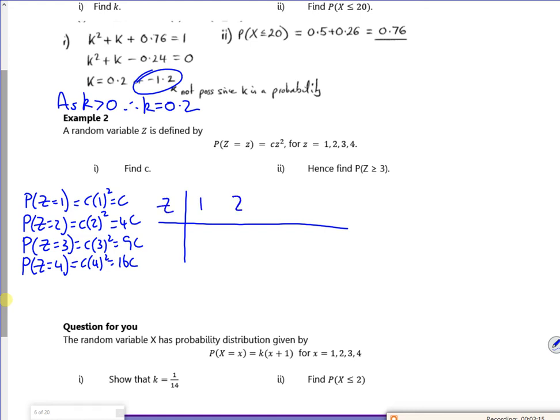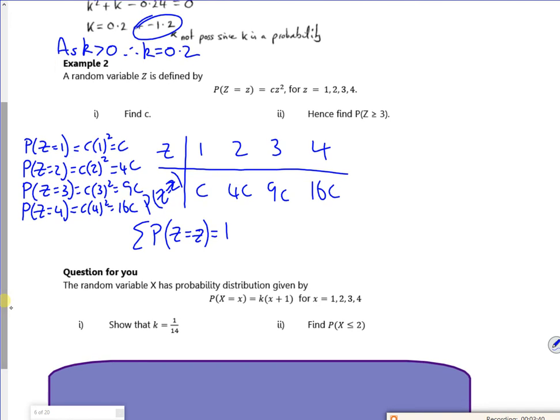So I can draw a table. I've got my z values: 1, 2, 3, and 4. And the probability that z is z is going to be c, 4c, 9c, and 16c. So for part one I'm going to find c. But I know that if I add up all my probabilities, that's going to equal one. So I've got 30c, so c is 1 over 30.